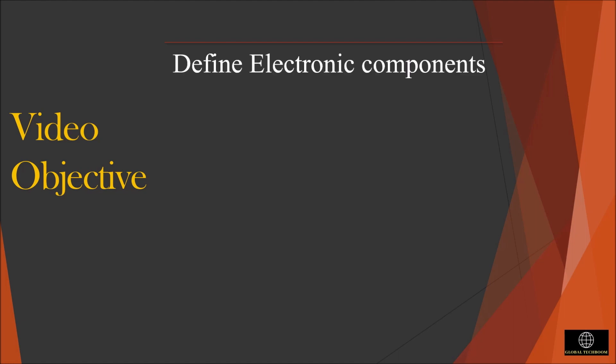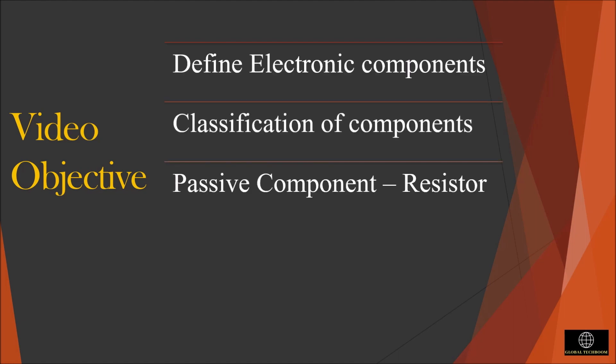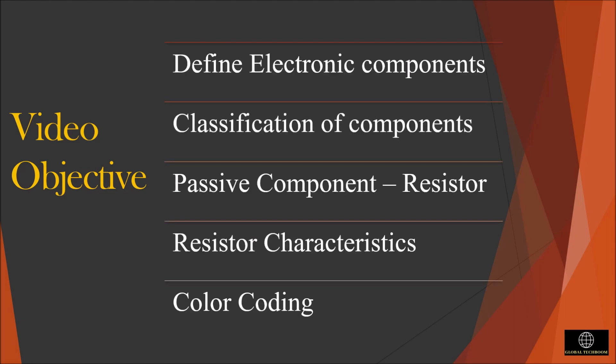If you are new to electronics or starting to build electronic circuits, then we should get some basic knowledge about electronic components. In this video we will be going through the basic concept of electronic components and their classification, and we will be starting with the first passive component resistor and its characteristics and the color coding.